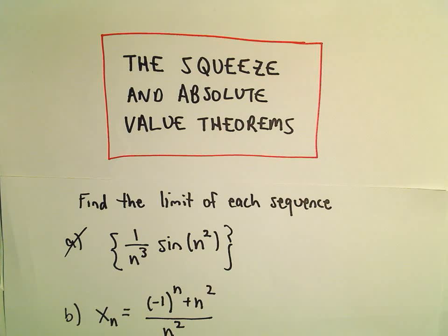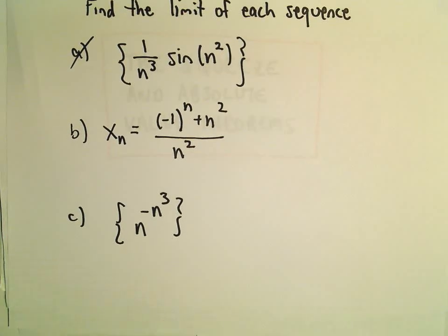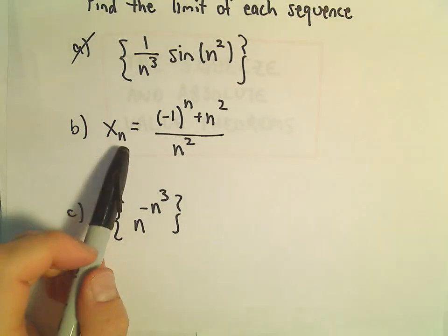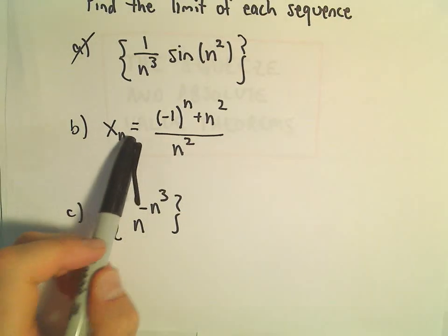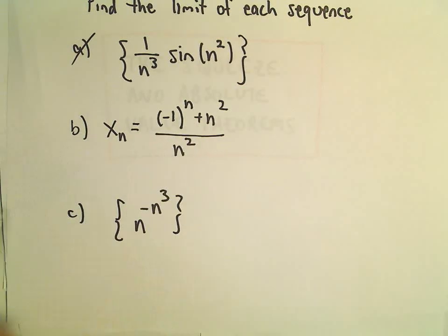Here we're going to do a limit problem involving the absolute value theorem. We're going to find the limit of the sequence x of n equals negative 1 to the n plus n squared over n squared.